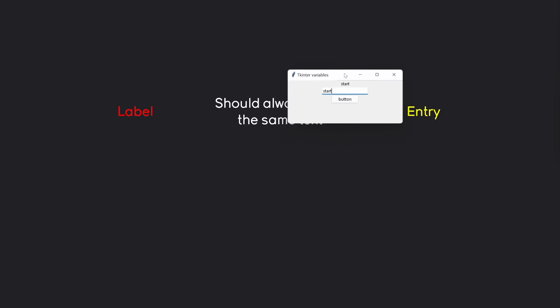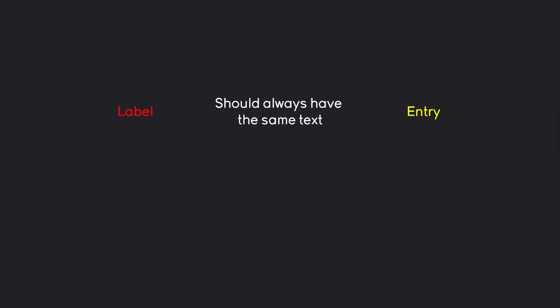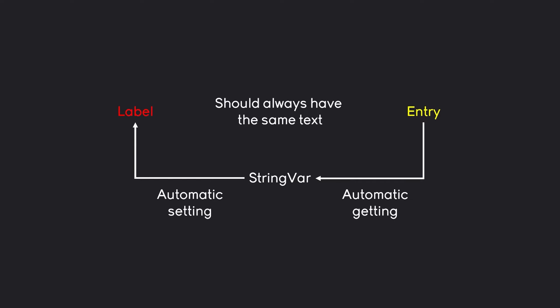Let me show you the project we are going to build. Whatever I write in the entry is going to be the text of the label — those two widgets are very closely connected. We couldn't do this so far, but we can do it quite easily using a tkinter variable. Basically, how it works is we create a string variable — a tkinter variable that stores a string. This variable automatically gets the value of the entry and automatically sets the value of the label.